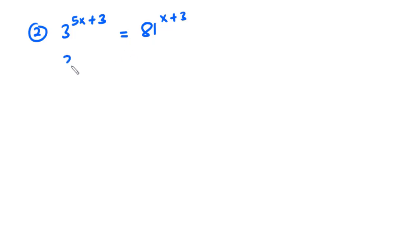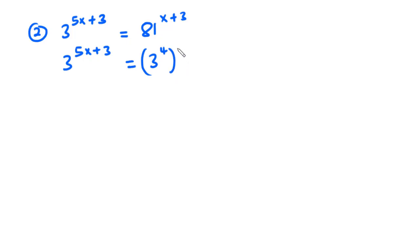So we have 3 exponent 5x plus 3 equals 3 exponent 4, all exponent x plus 3. Now we can multiply 4 and then x plus 3.